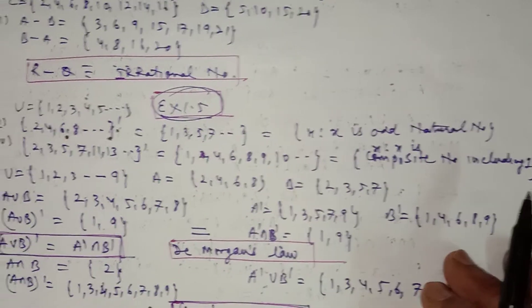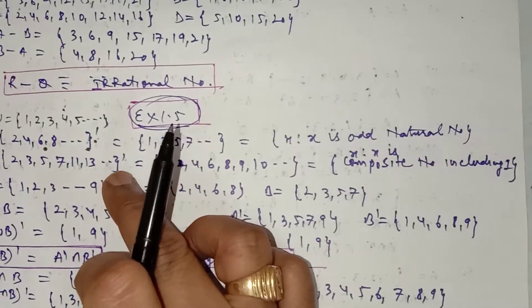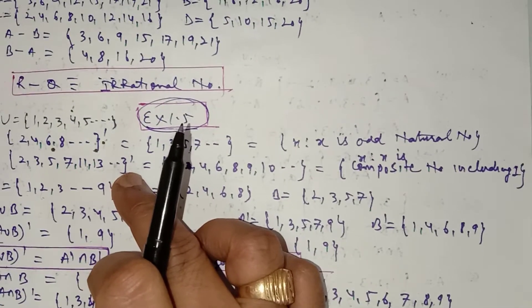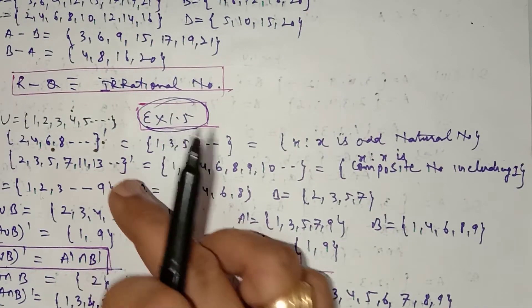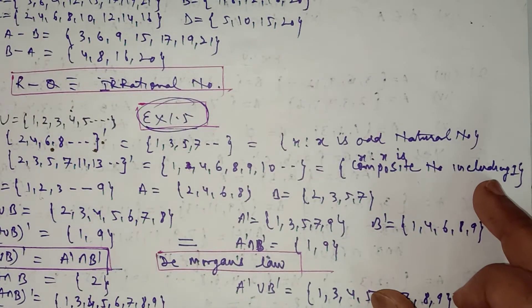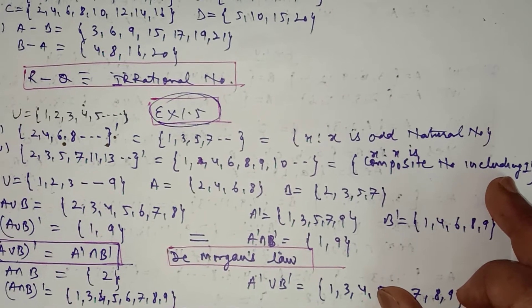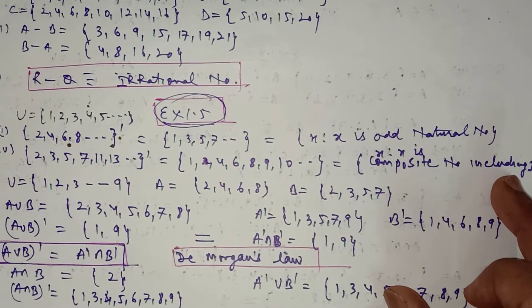I am including 1 because the complement of the prime numbers will be composite numbers, and since 1 is neither composite nor prime, I have to include 1 here as well. So like this, you can do all parts of question number 3.